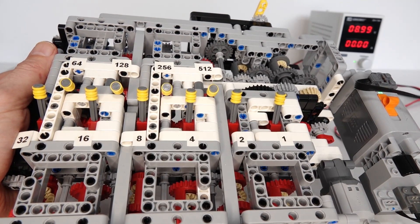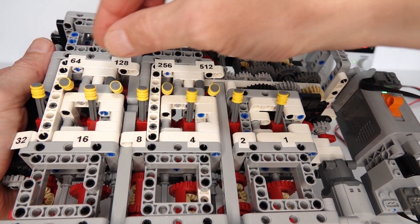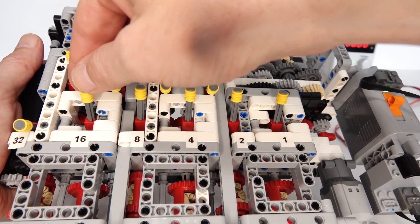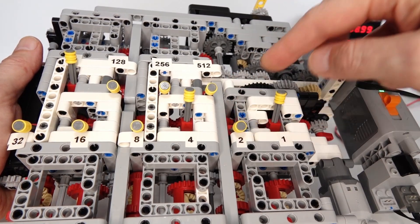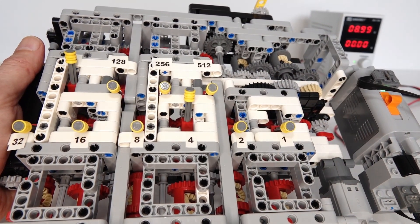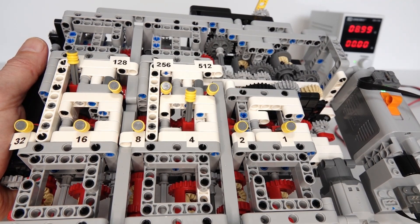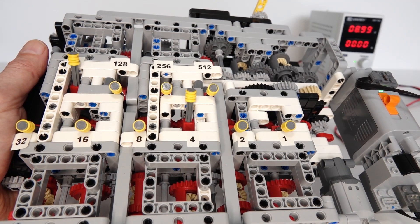For example, if you want to create 0.123, you'd need to add 64, which is over here, plus 32, plus 16, plus 8, plus 2, plus 1. If you add up all those numbers, they'll add up to 123. So the overall gearing ratio would become 123 divided by 1000, which is 0.123.